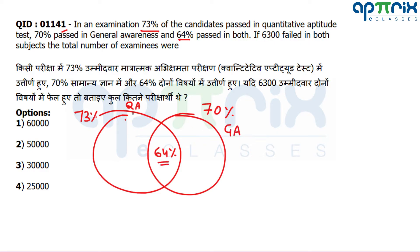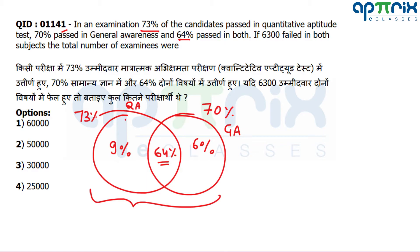Since the common area is 64% and QA total is 73%, only QA will be 9%. Similarly, only GA will be 6%. They are saying 6300 have failed in both subjects. This Venn diagram represents students who passed in any subject — those who passed in at least one subject. Those who failed in both have no place here. The total in the Venn diagram: 64 + 6 + 9 = 79%.